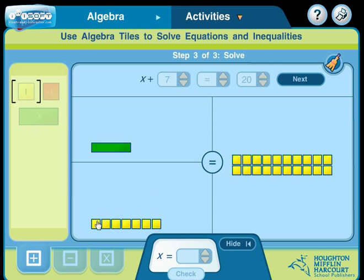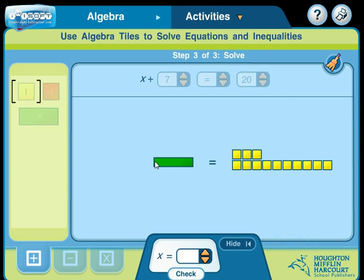Now, we're going to be subtracting 7 from this side of the equation. And whatever we do to the left side, we have to do to the right side. So let's erase these. 1, 2, 3, 4, 5, 6, 7. We're subtracting 7 from both sides. Now as we do that, if you take a look, you can see that whatever x is has to equal what we have over here on this side.